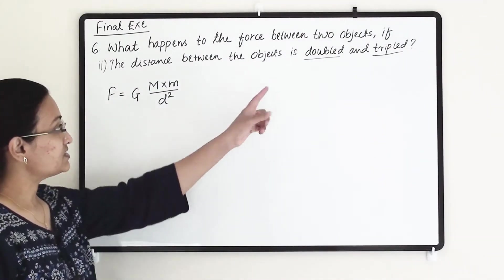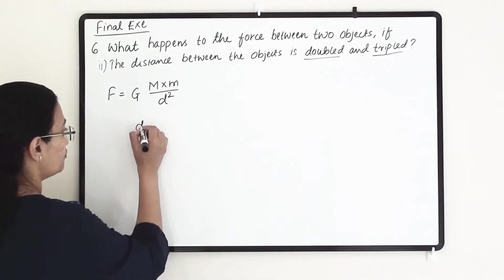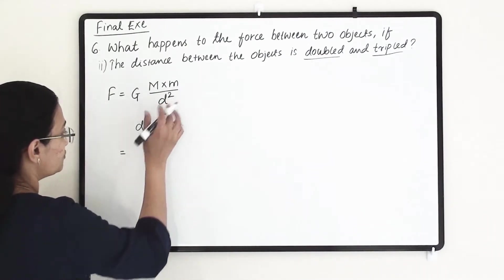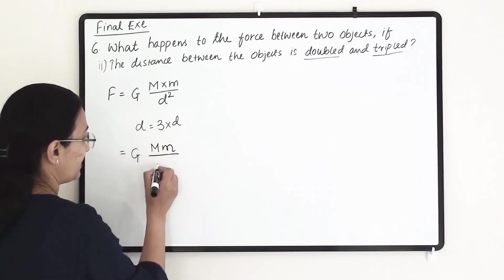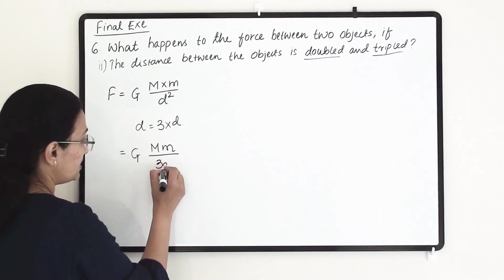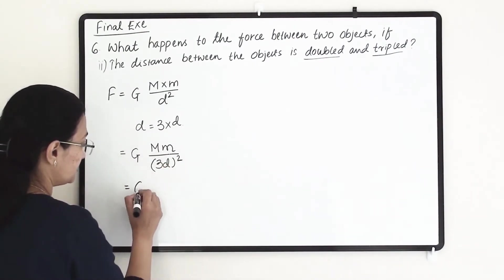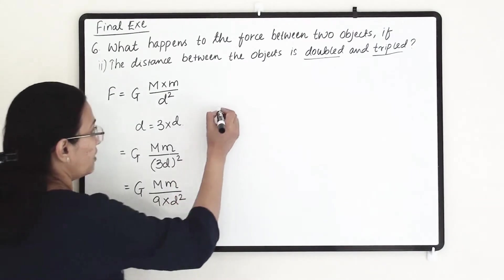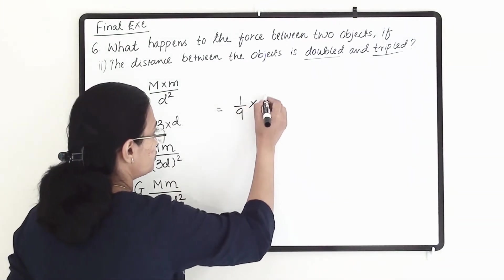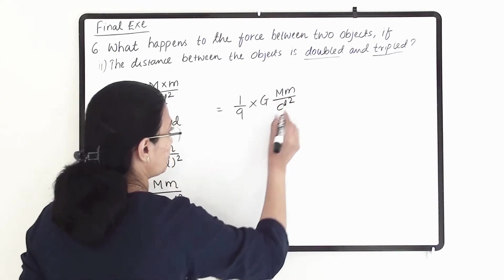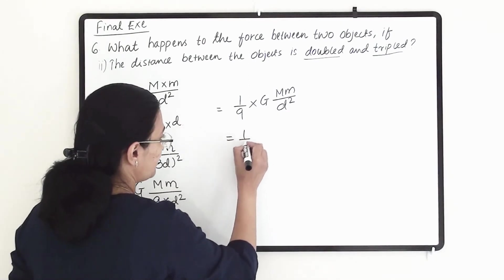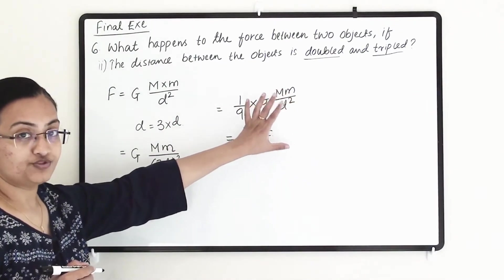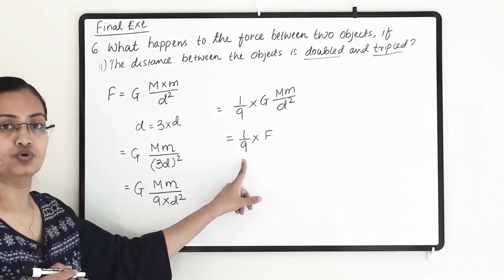In the second case we make the distance triple, so d equals 3d. Putting this into the equation, we get G times capital M times small m divided by 3d squared. 3 squared is 9, giving us 9 times d square in the denominator. Taking 9 out, we get one-ninth times the original force formula F. So when the distance is tripled, the force is reduced to one-ninth.